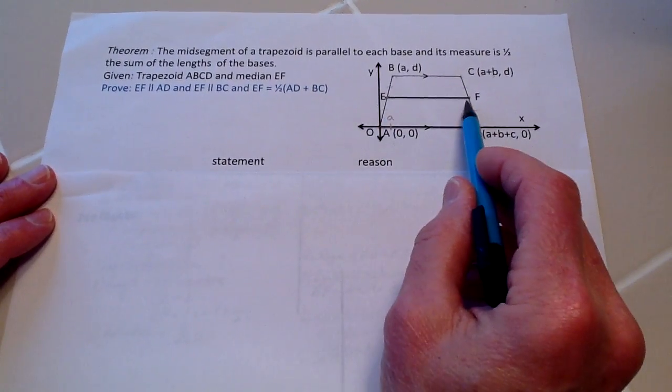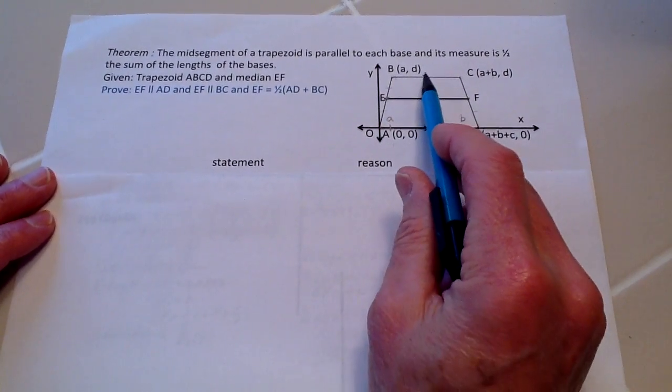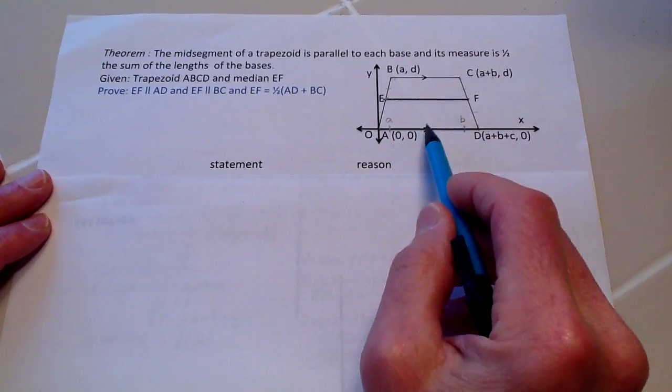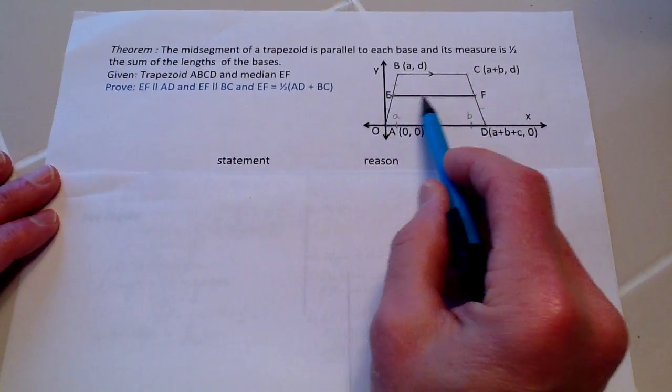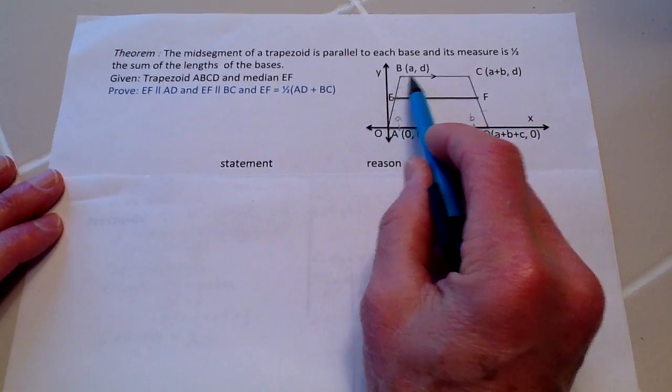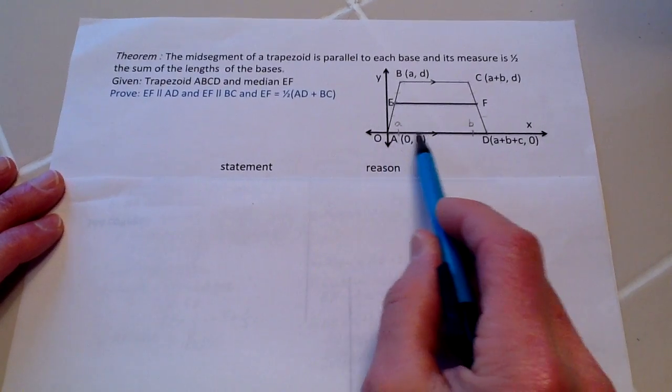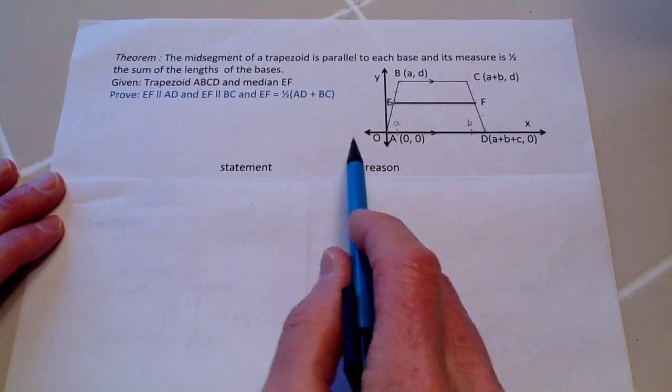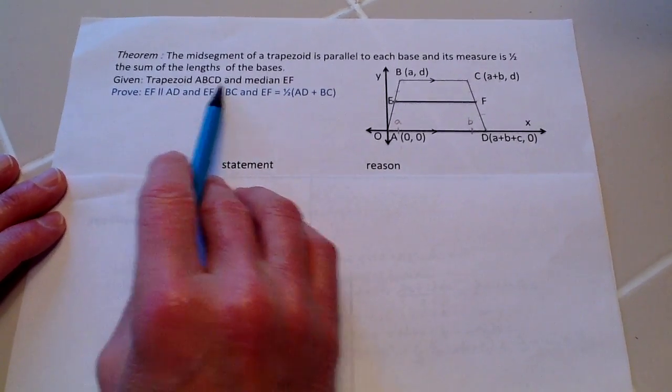This line here, EF, is going to be parallel to both of those. And that this length of this line right here is going to be actually equal to one-half the sum of this length and that length. And that's what we're going to be proving.